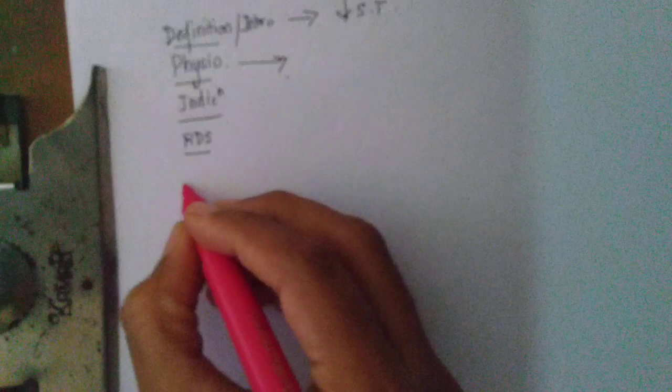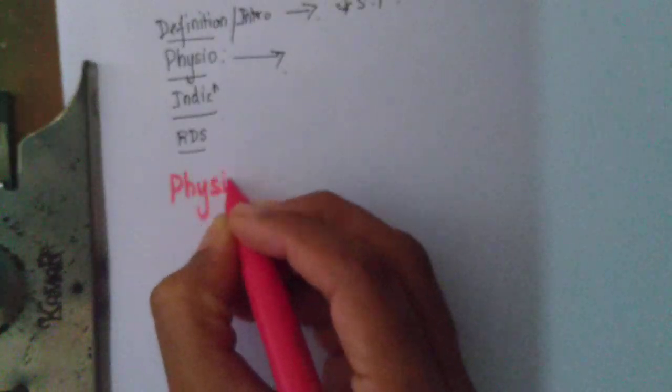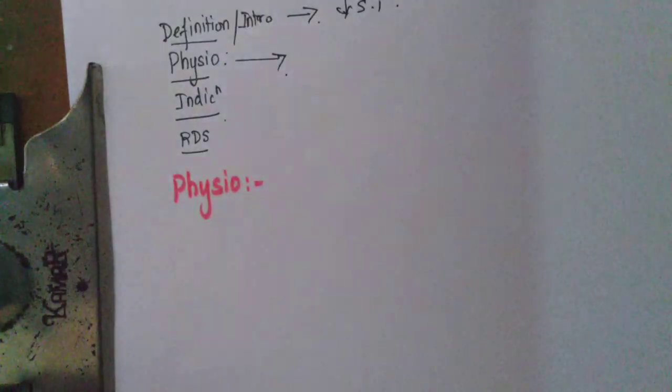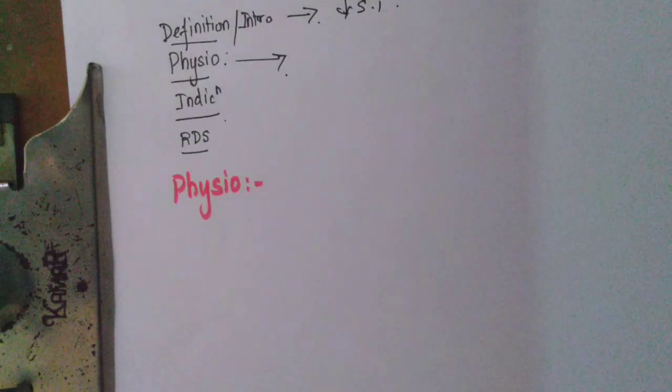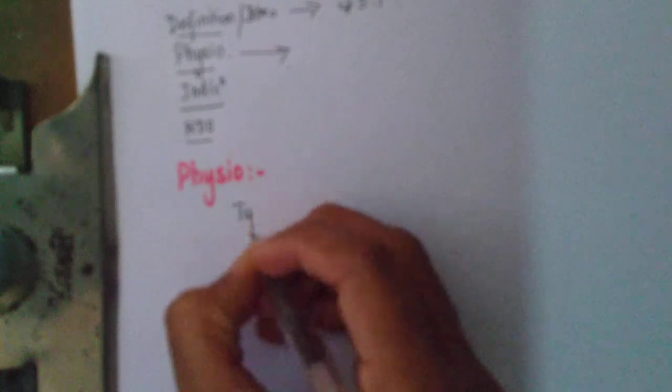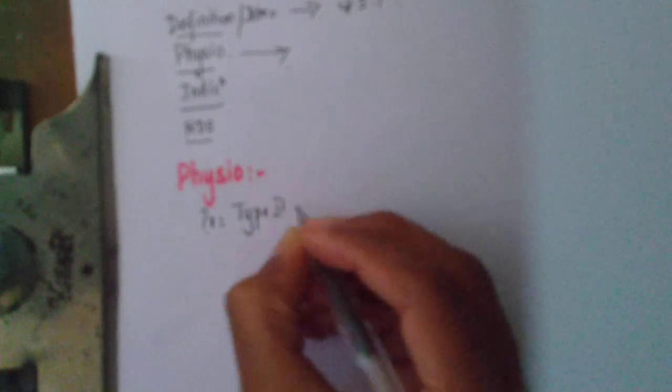So physiology wise, all of us know things about surfactant, but putting it together during a theory exam is sort of difficult. So if we have an outline of what we should write, I think it will be easier. And that is what I am trying to do. So physiology, where is it produced? It is produced in type 2 pneumocytes in lungs.